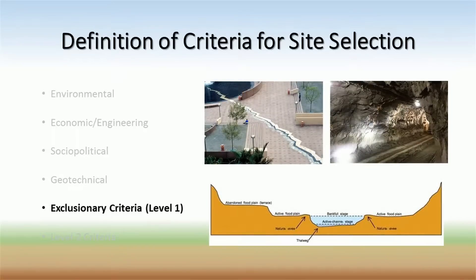Exclusionary criteria, or Level 1 criteria, include mandatory standards for the siting of all landfills. If a potential site includes one of these items, it has to be discarded as a potential selection. If a site is located on a flood plain, is sitting on a major aquifer, is situated above underground mines or caves, is along a fault line, is on top of or near wetlands, is a historic site, or intrudes on the habitat of an endangered species, it is immediately removed from contention. These criteria ensure that a landfill cannot be built where it may endanger humans or wildlife, and they also protect against the pollution of important water resources and ecosystems.